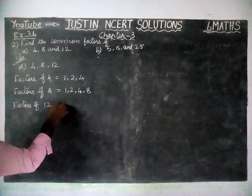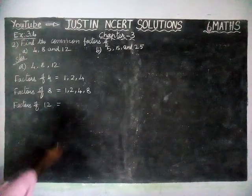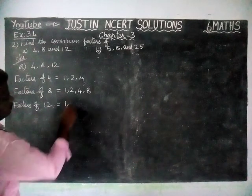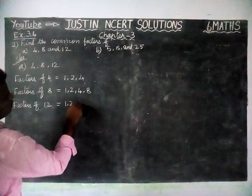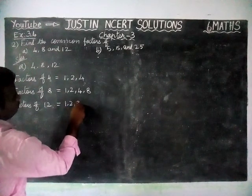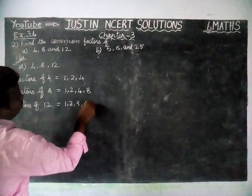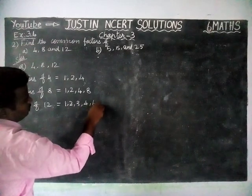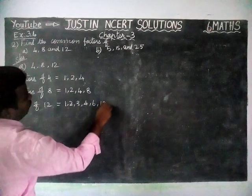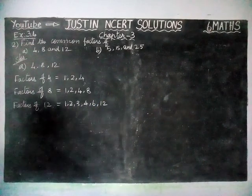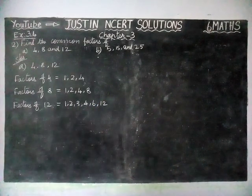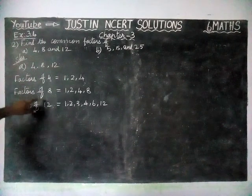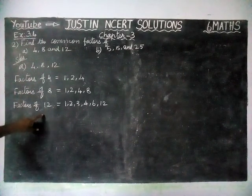Factors of 12 are equal to 1, 2, 3, 4, 6, 12. So now we have found all the factors of 4, 8, and 12.